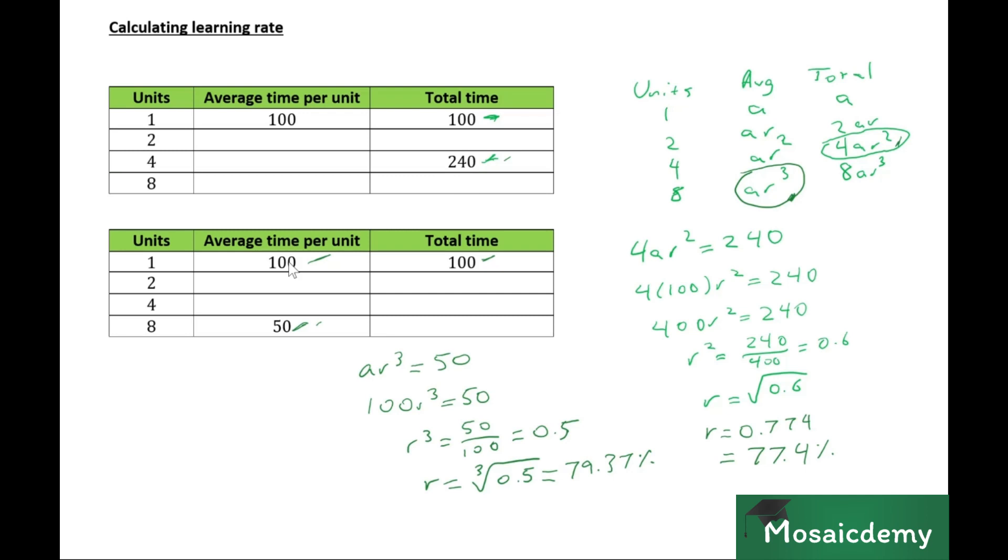But remember, based on the learning curve, average time per unit actually falls. So if the number below is smaller than the number above, then it's the average time per unit. So be careful about that.